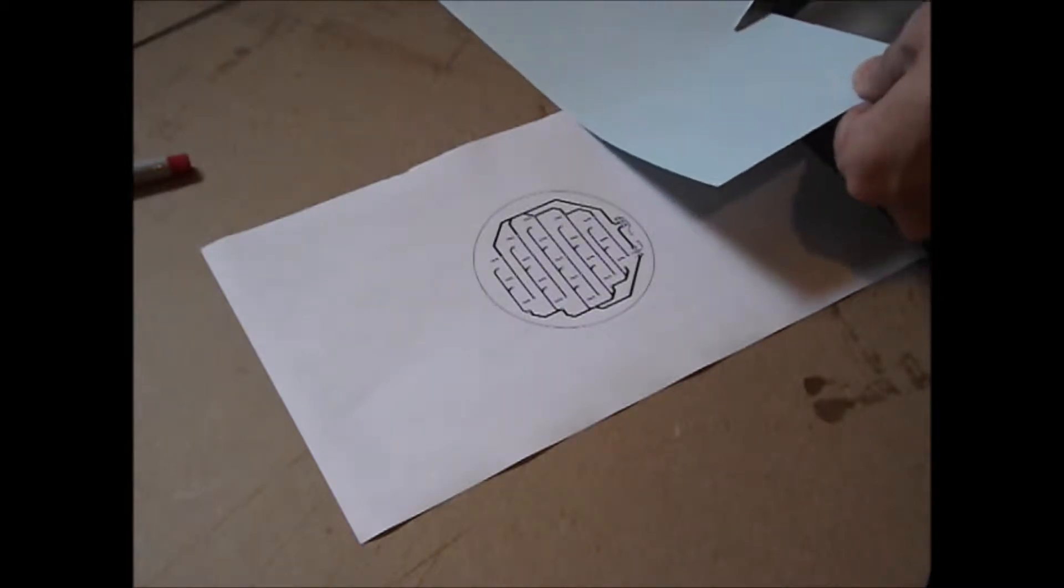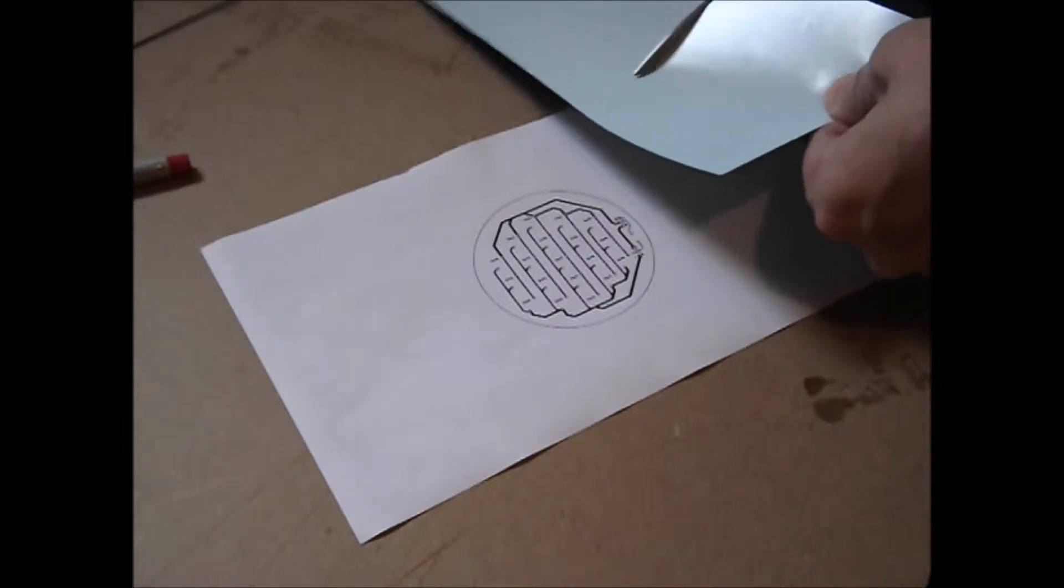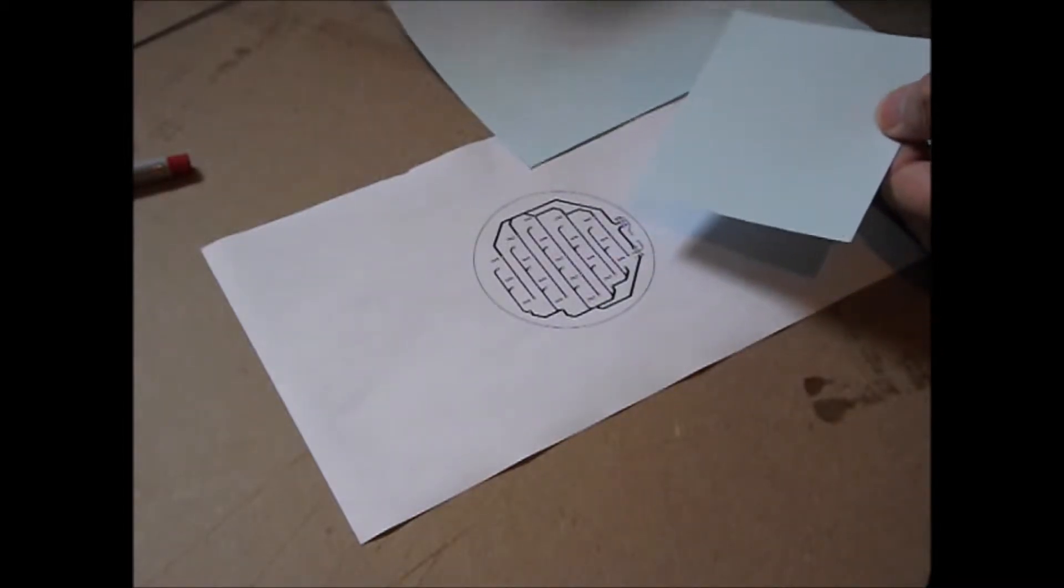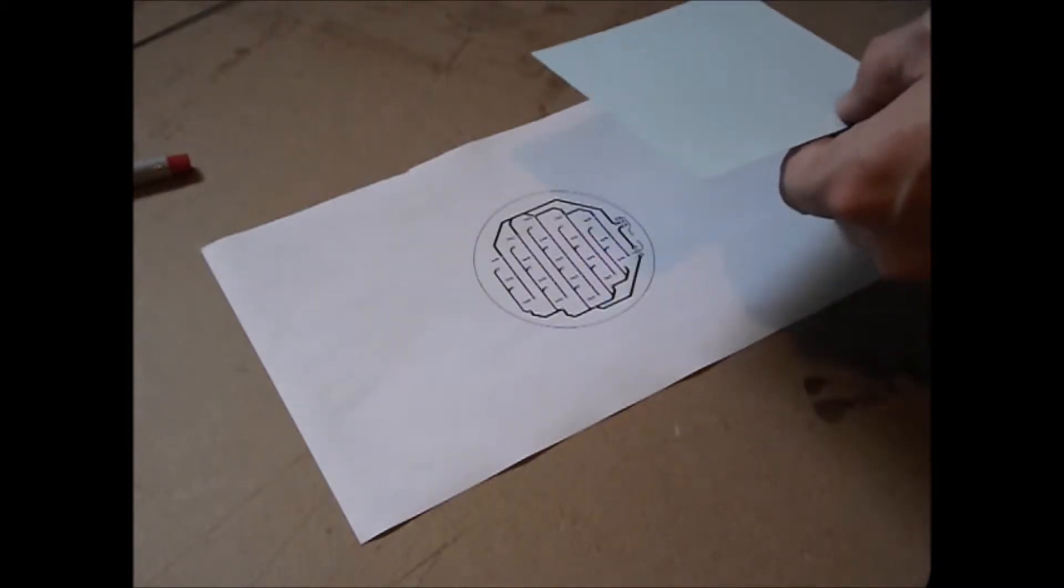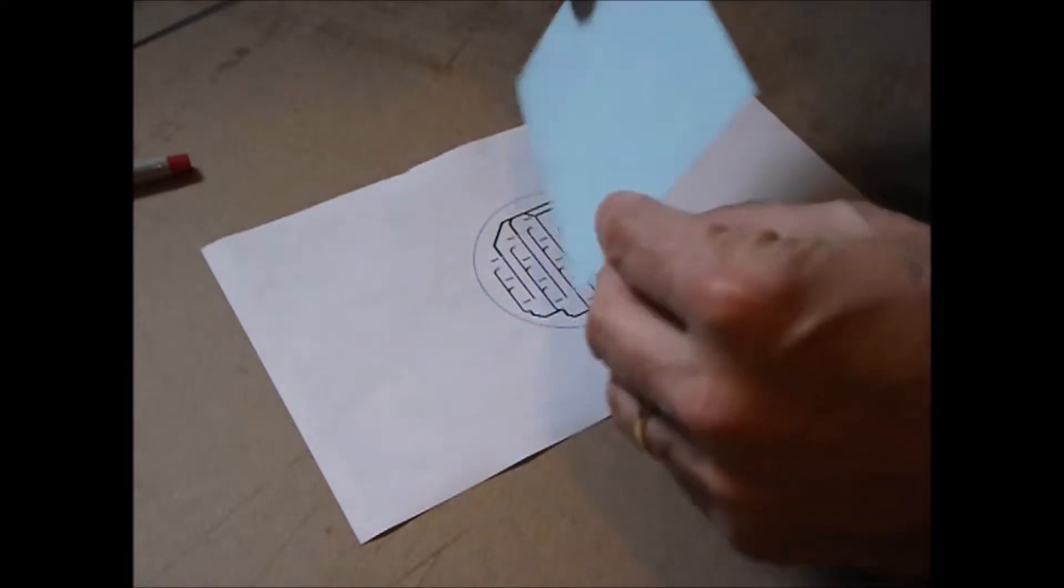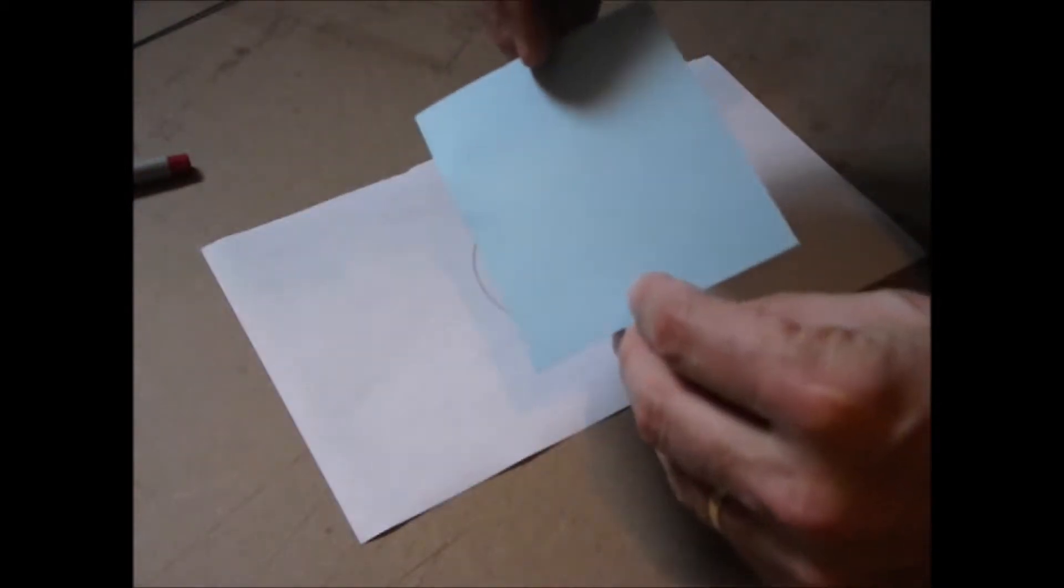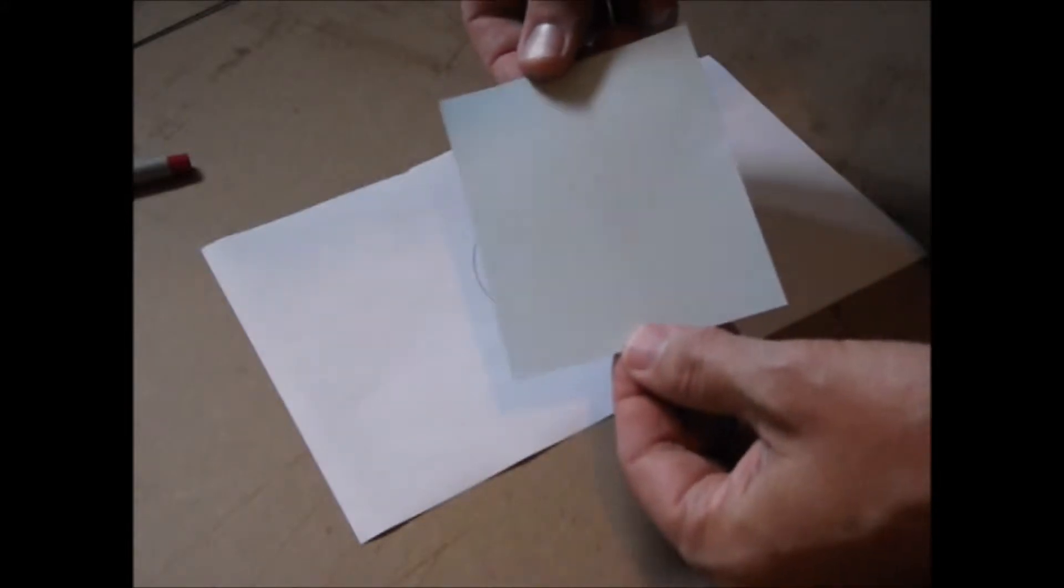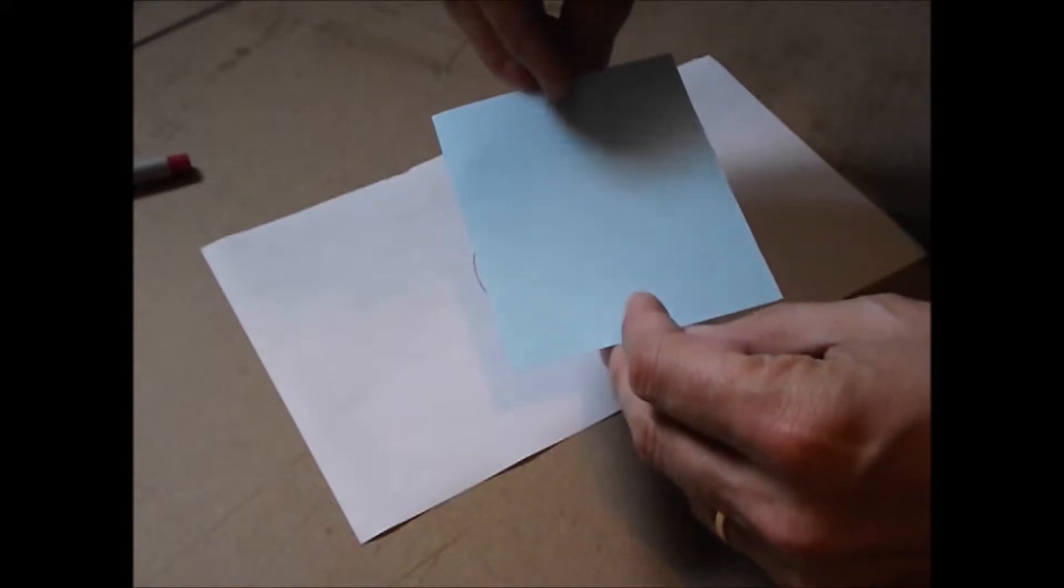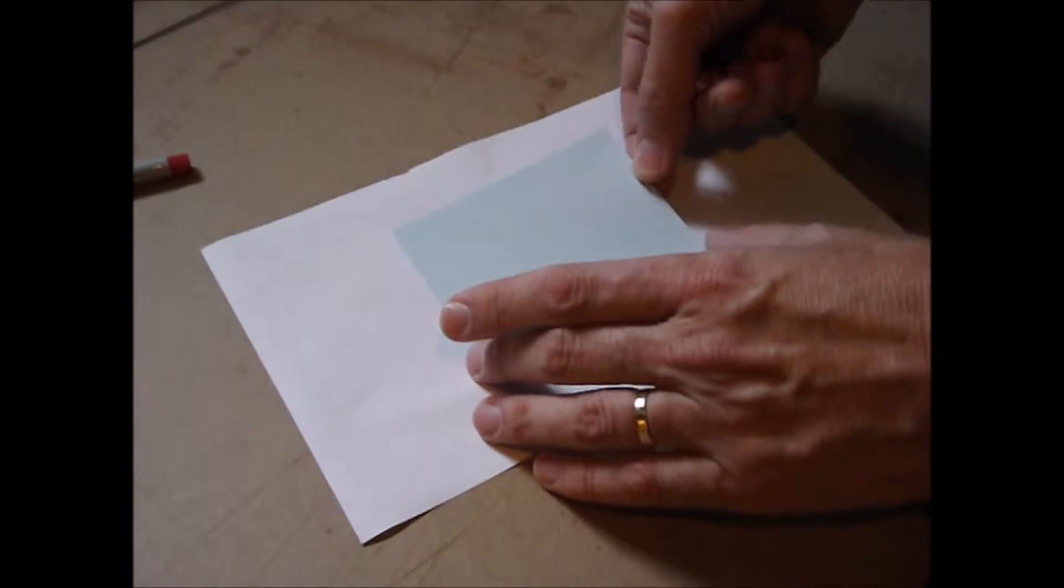And run it through the printer a second time. And the side on this transfer paper, the side you want to print on is the light blue glossy side. The paper has two sides, it's a lighter blue glossy side and a darker blue matte finish side. You want to print on the glossy side, the lighter blue glossy side.